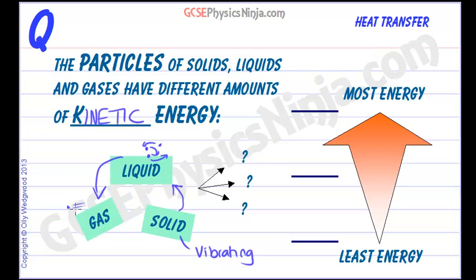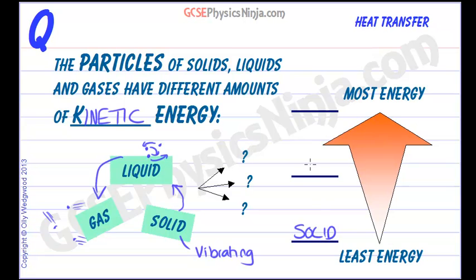In a gas, the particles are moving randomly, far apart from each other, quite fast, and have high kinetic energy. So the one with least kinetic energy is a solid, then we have a liquid, and then we have a gas.